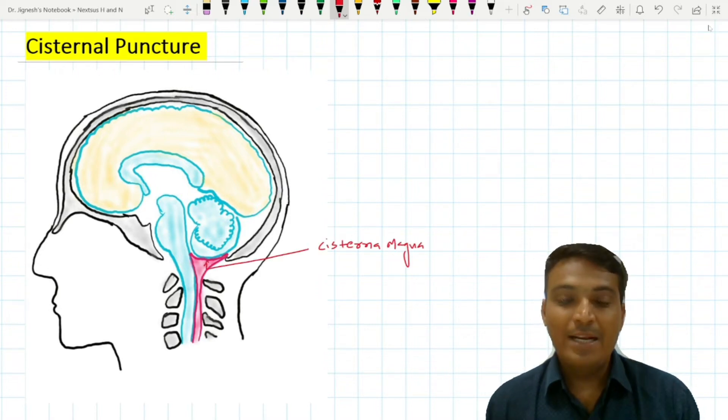The cisterna magna is the collection or pool of CSF at the cerebelomedullary area. That's why it is also called the cerebelomedullary cistern.